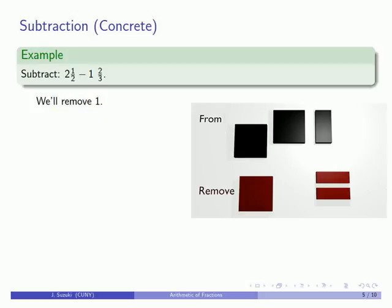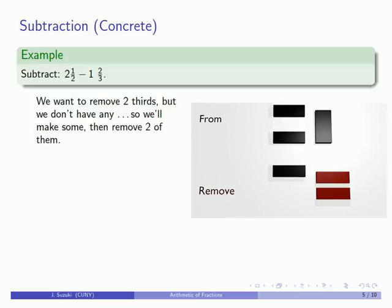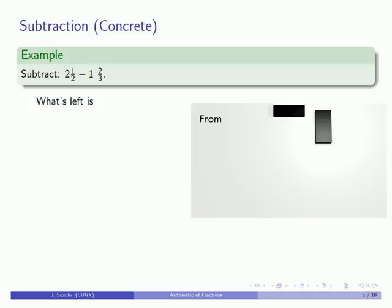We'll remove 1. Now we want to remove a couple of thirds, but we don't have any. That's no problem. We'll just make some by cutting this unit into thirds. Now we can remove two of them. And okay, I have to say it.